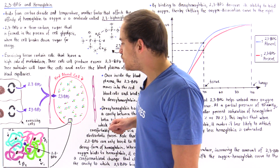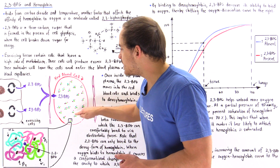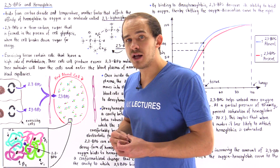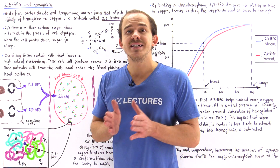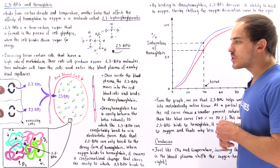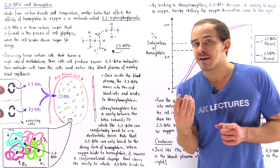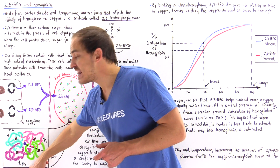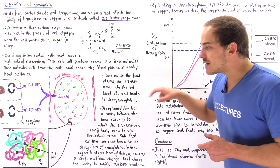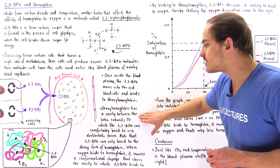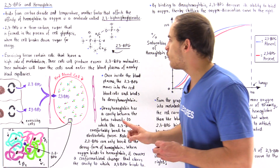Once our 2,3-BPG molecule enters the red blood cells, some hemoglobin proteins will not contain any oxygen — these are called deoxyhemoglobin proteins. The 2,3-BPG molecules are able to bind to a cavity found between the beta-1 and beta-2 subunits of deoxyhemoglobin.